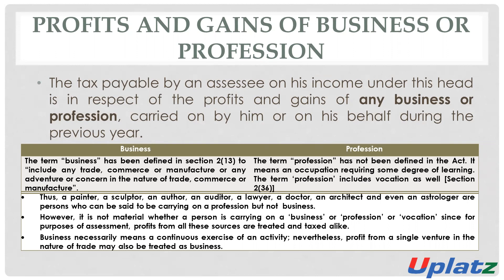Business includes: if there is any person trading in any goods or services, it will be known as business. If there is any person manufacturing any goods, it will be considered as business. Any person engaged in an adventure will also be considered as business. So business includes trade, commerce, manufacturing, or an adventure or concern in the nature of trade, commerce, and manufacturing.